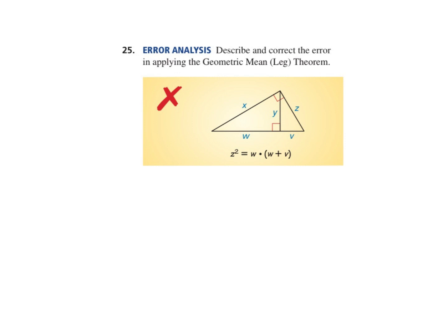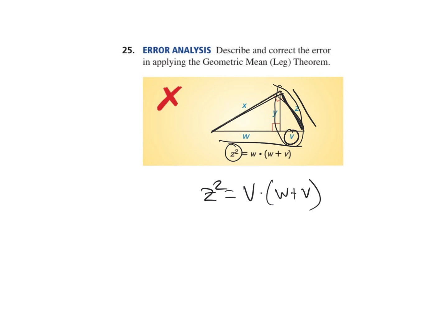Now the last one — what did they do wrong? Let's just solve the problem. They're solving for Z and using the formulas. This is an altitude of the bigger triangle. So Z squared is equal to the closer leg, V, times the longer leg, W plus V. Oh, so they put the wrong letter there — and that's how you would do that piece.